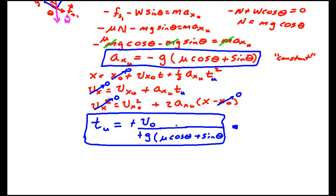I can solve that for the distance. So x is going to be equal to minus v₀² divided by 2 times—minus g, which will cancel that minus—μ cos θ plus sin θ.